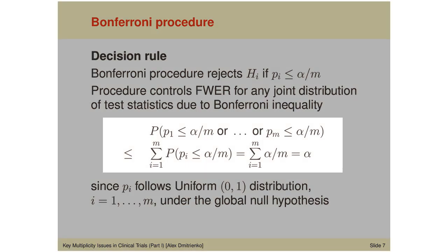The Bonferroni inequality shows that the probability that at least one p-value is less than or equal to alpha divided by m — evaluated under the assumption that all null hypotheses are true — is bounded from above by alpha. The key fact used in this inequality is that each p-value follows a uniform distribution on the 0-1 interval under the global null hypothesis of no effect. Therefore, the probability that p_i is less than or equal to alpha over m is simply equal to alpha over m.